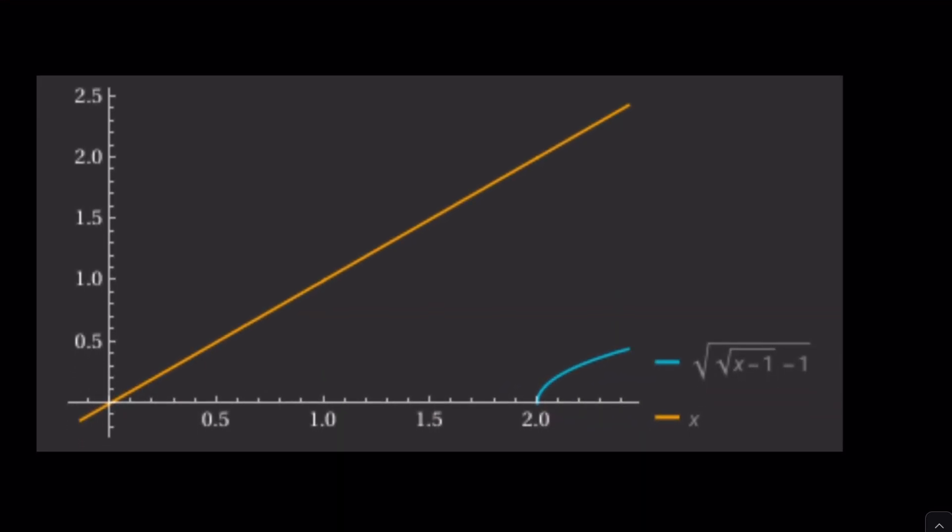This is why we have complex solutions. These two curves do not intersect. One of them is a radical that starts at 2. Why? Because of the domain. And this brings us to the end of this video.